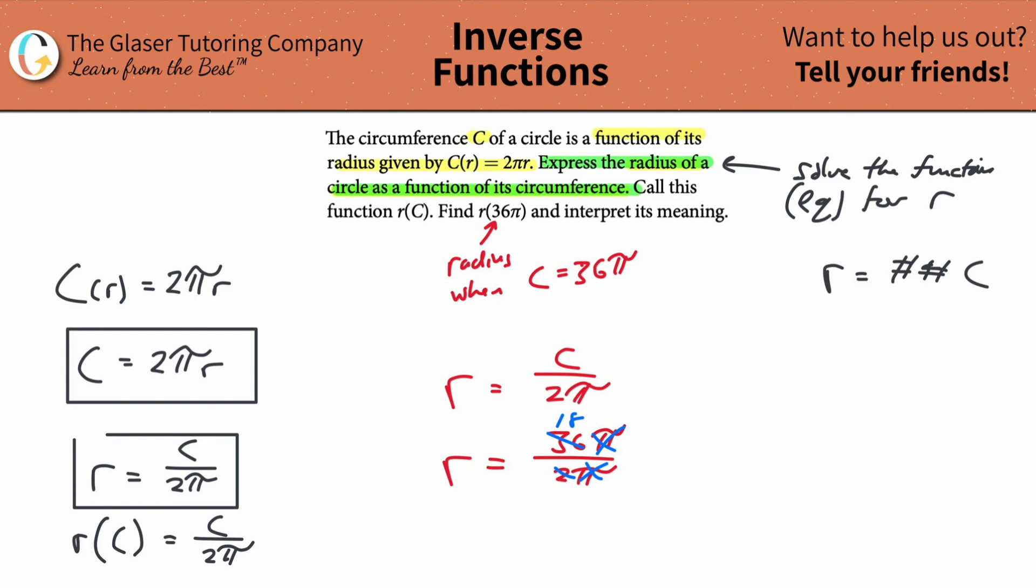So in other words, I now know that the radius is equal to 18. What does that actually mean? That means that when the circumference is equal to 36π, if you knew that, then I can find the radius and that should be equal to 18.